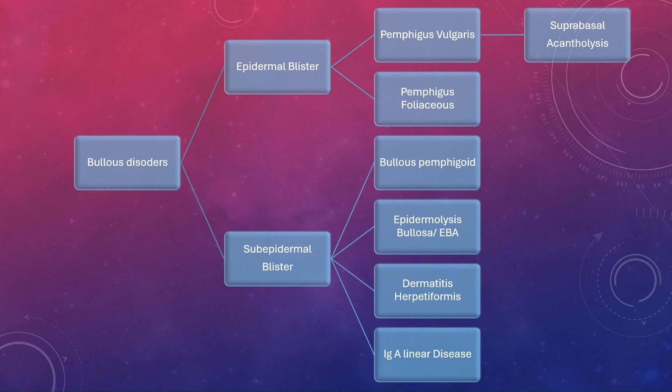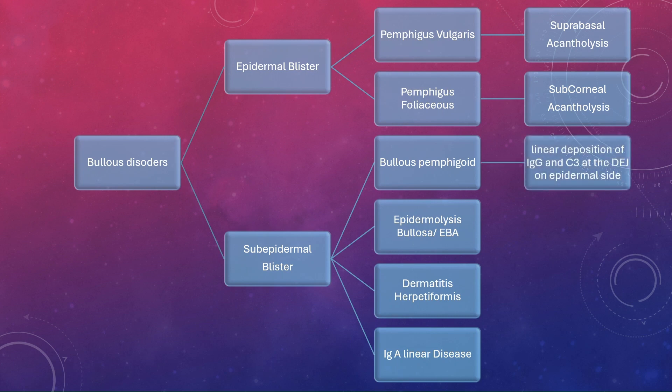In pemphigus vulgaris there is a suprabasal acantholysis, so there is a gap between the basal layer and the rest of the epithelium. In pemphigus foliaceus there is a sub-corneal acantholysis, so there is a gap between the corneal layer and the rest of the epithelial layers. In bullous pemphigoid there is a linear deposition of immunoglobulin G and C3 on the epidermal aspect.